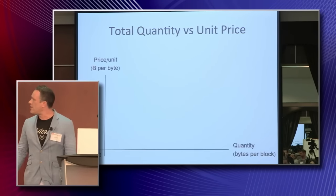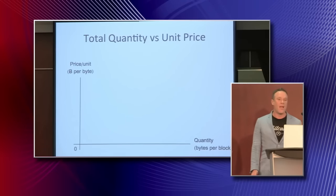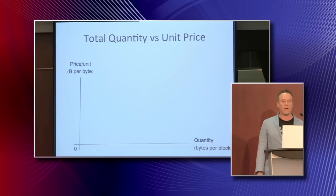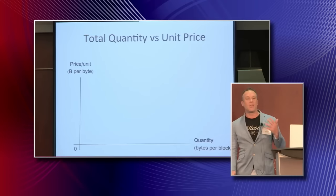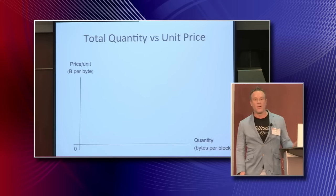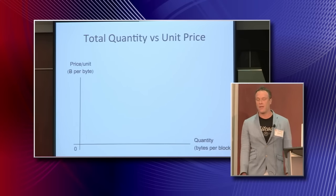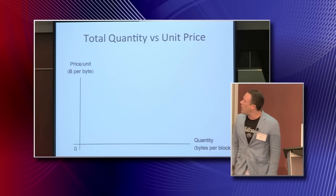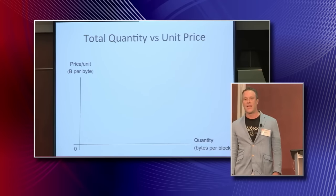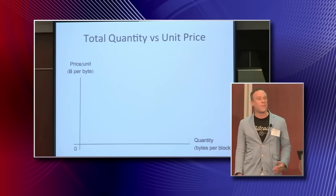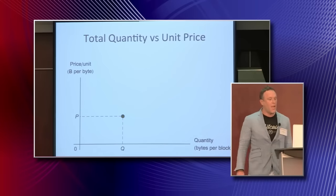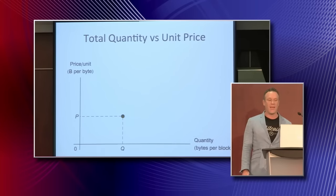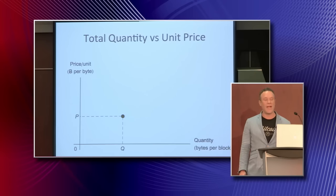In this talk we'll be looking at several charts and they'll all share the same axes. On the horizontal, we'll plot the quantity of the commodity — that's the total number of apples produced per year or the total number of bytes per block. On the vertical, we'll plot the unit price of the commodity — that's the price of one apple or the price of one transaction's worth of block space. The coordinates of a point thus simultaneously represent the price and quantity of that commodity.